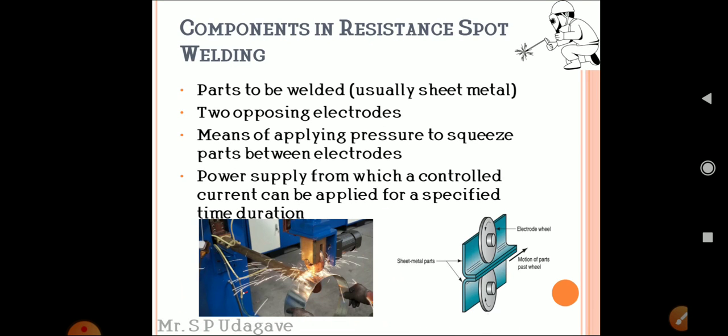The components in resistance seam welding are: the parts to be welded, usually sheet metal; two opposing electrodes in the form of wheels - upper wheel and lower wheel; and a power supply from which a controlled current can be applied for a specified time duration.